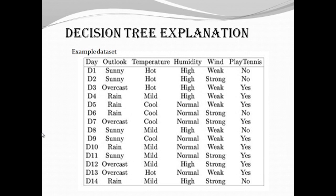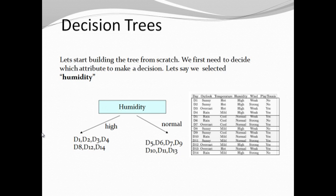Decision tree explanation. This is an example data set which contains five attributes: outlook, temperature, humidity, wind, and play tennis. Let's start building the decision tree. In this table, firstly we have to select any one of the attributes. Let us say humidity. In humidity there are two types: high and normal. Under high, we have D1, D2, D3, D4, D8, D12, and D14. Under normal conditions, D5, D6, D7, D9, D10, D11, and D13.